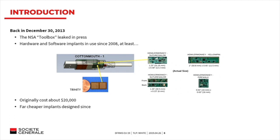Cotton Mouth is an HID implant which embeds two modules: the Trinity multi-chip module with an ARM9, flash memory, and FPGA; and the second module is the Cottonmouth-I radio frequency module allowing remote control of the device. Ten years ago, this kind of module cost about $20,000 for one. But cheaper implants have been designed and are now available to anybody.